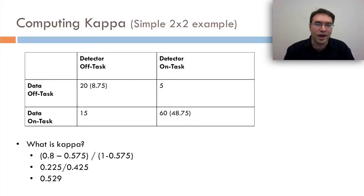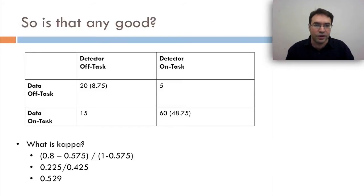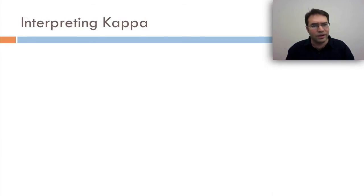So what is kappa? Kappa is the actual agreements minus the expected agreements divided by the total possibility of agreements minus the expected agreements. In this case, 80% minus 57.5% over 100% minus 57.5%. So in other words, kappa is 52.9% or 0.529. So this model is 52.9% of the way from expected agreement to perfect. So is that any good? What do you think?